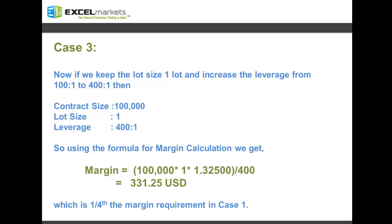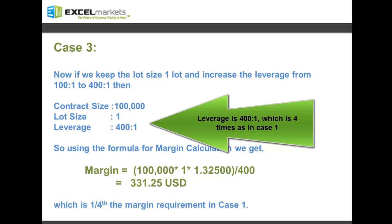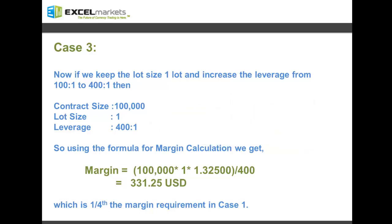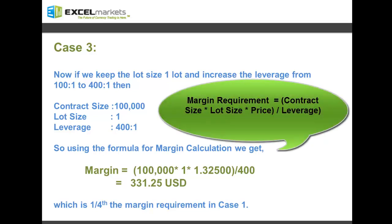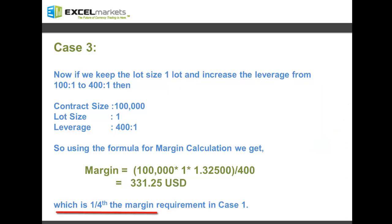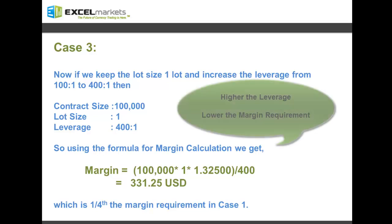Now if we keep the lot size at 1, the same as in case one, but increase the leverage from 100:1 to 400:1 — so our trade position is the same one standard lot, but leverage has been increased four times to 400:1 — using the formula for margin calculations, margin equals 100,000 times 1 times the open price of the order, divided by 400. The value comes out to be 331.25 US dollars, which is one fourth the margin requirement as in case one. So by increasing the leverage of your account, you have reduced the margin requirement. Therefore, margin requirement is inversely proportional to the leverage chosen.